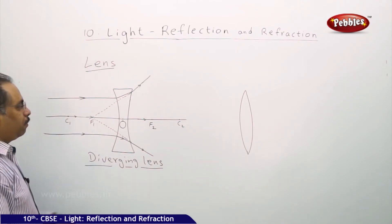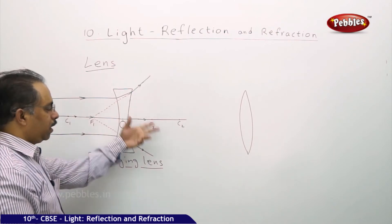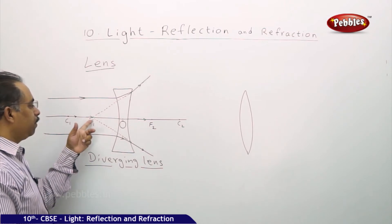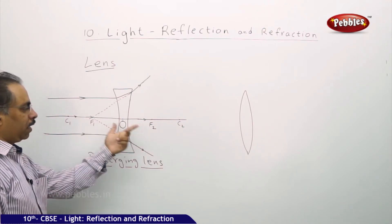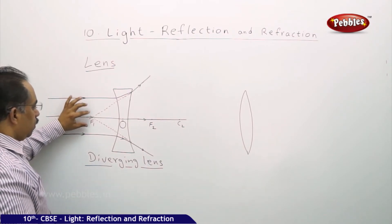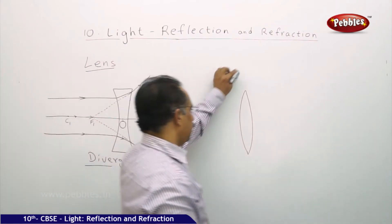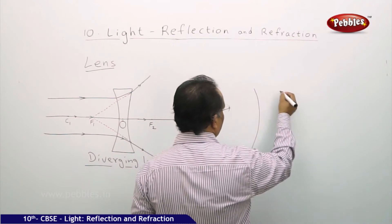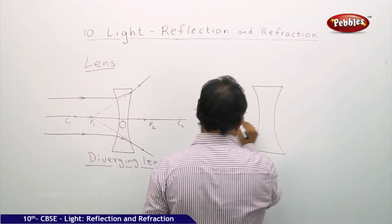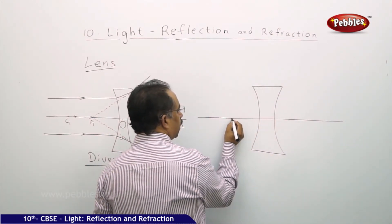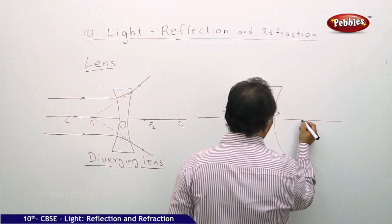Now, these light rays coming from infinite distance are parallel to the principal axis. When they are parallel to the principal axis and pass through the lens, they are divergent. So if an image is formed, it will be formed at this particular focus. We can call them primary focus F1 and F2. Now if the object is not at infinity — it is closer to the lens — how does the image get formed? Let us see that here. Let us assume a concave lens with a principal axis, F1 on this side, the optic center O, and F2 on the other side.